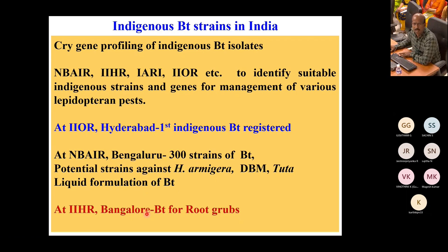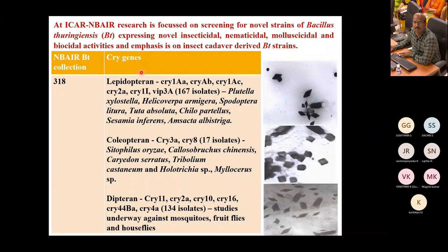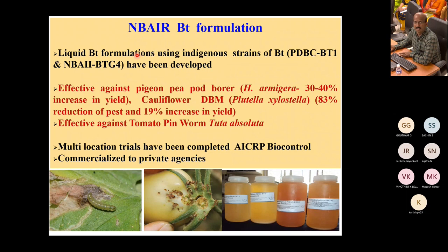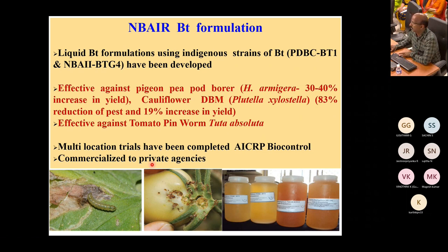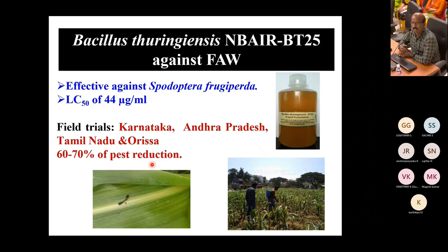Different multi-location trials were conducted under ICAR biocontrol programs, and we have commercialized this to two different private agencies based on the toxicological data. A recent technology is BT-25 strain, effective for Spodoptera frugiperda (fall armyworm), and several location field trials have been conducted.